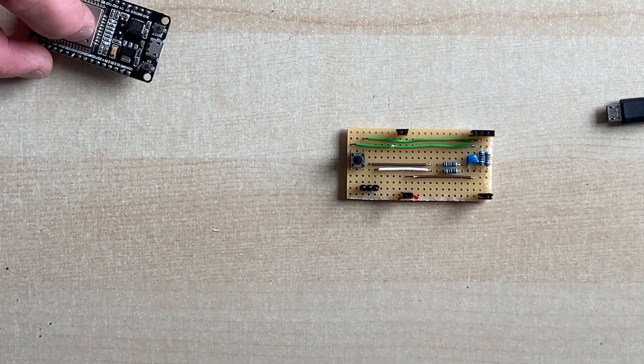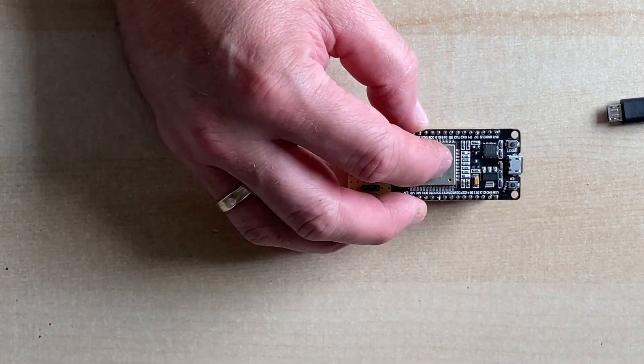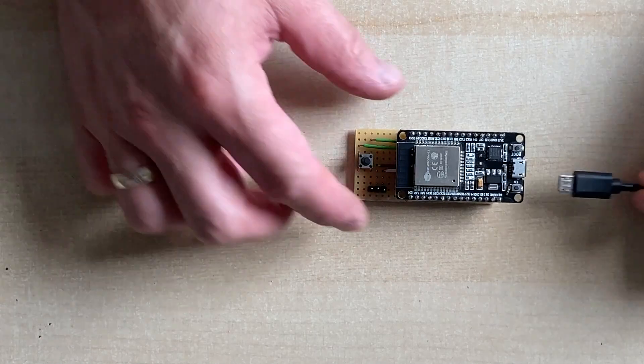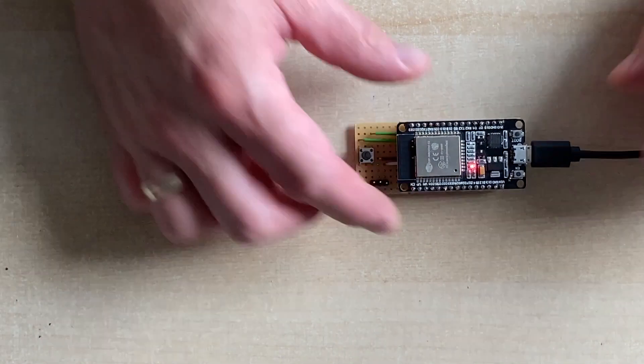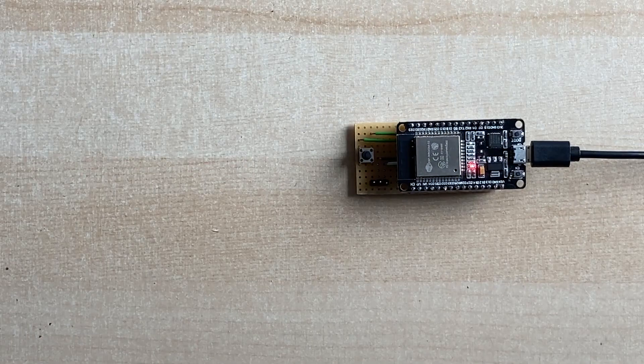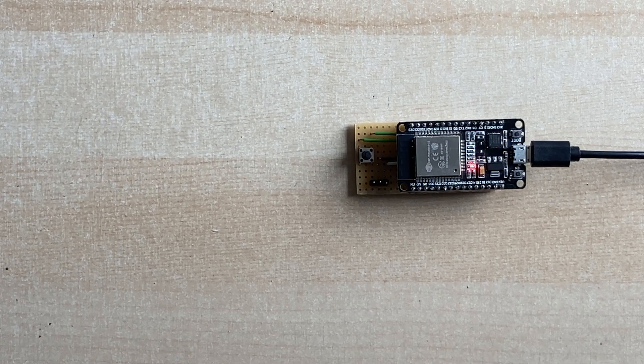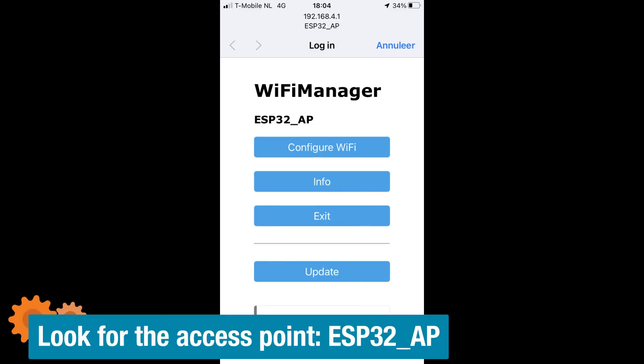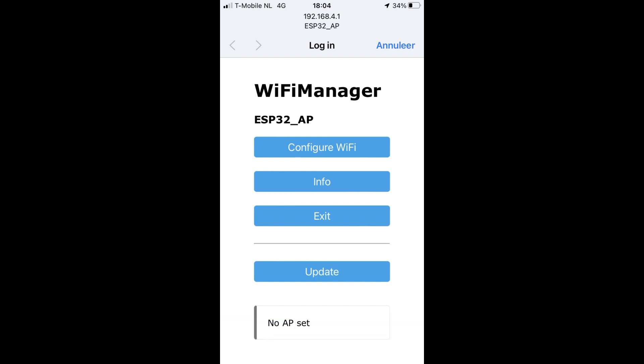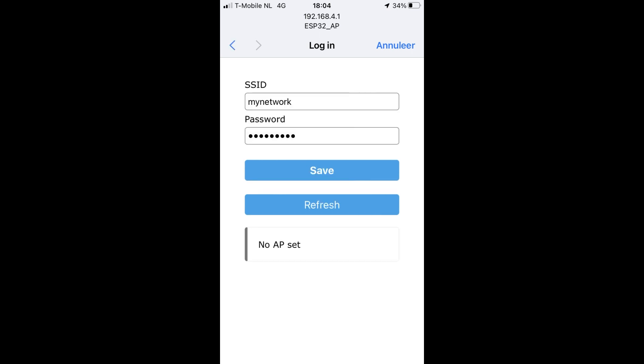Let's take our ESP32 that we have programmed and put it into the board we've just created. Now all you need to do is power it up. When you boot it for the first time, the device has no memory of your networks, so it will start as an access point. You have to connect to the access point using your cell phone or any other WiFi enabled device, and the minute you connect it will start the WiFi manager. Here you can enter your credentials like your network and password and press save. After a reboot it will now be part of your network and you can access it by going to the appropriate IP address.